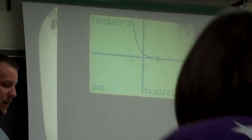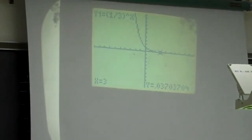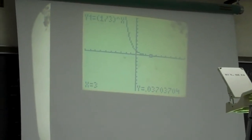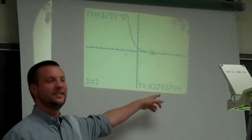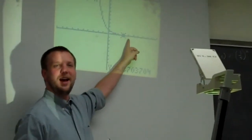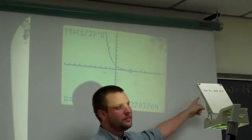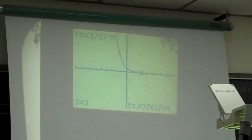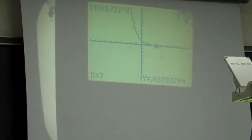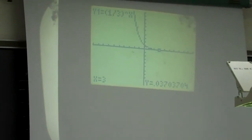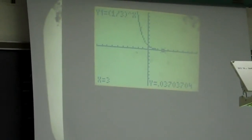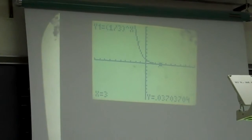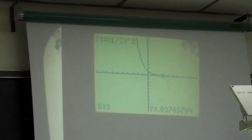If I go out to x equals 3, I'll give you a bonus point to tell me what that is. One twenty-seventh. What's happening? I'm going from one-third to one-ninth to one-twenty-seventh. What's happening every time I go up by one? What would x equals 4 be without a calculator? One over 81 — which is different than 81. There's a difference between having 81 dollars and one 81st of a dollar.